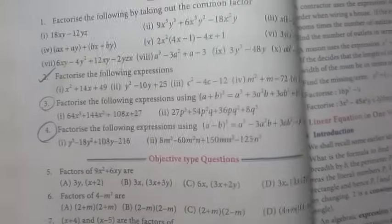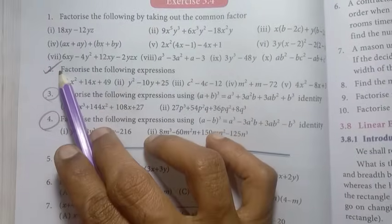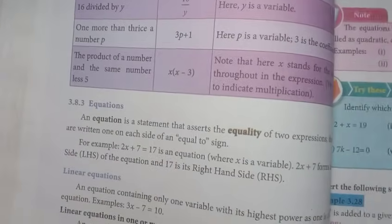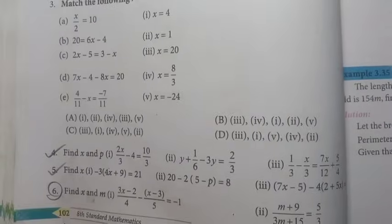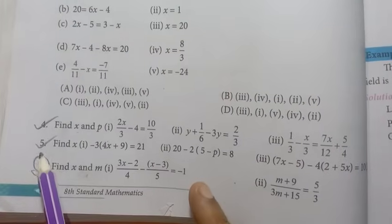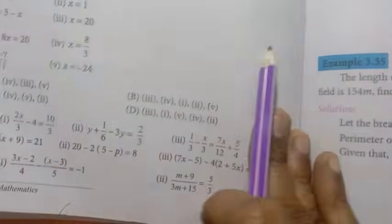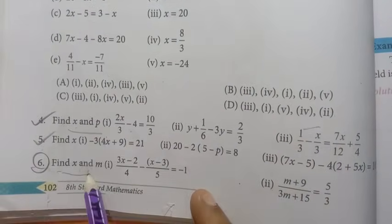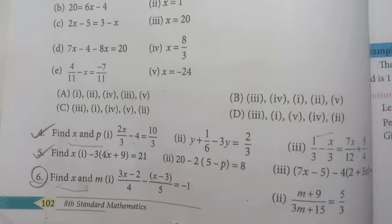Fourth one on page 96, exercise 3.4: second one, third one, and fourth one. On page 102, fourth question, fifth one, sixth one. In the exam pattern, they'll ask questions about identities using X and P or X and M variables, so practice these thoroughly.